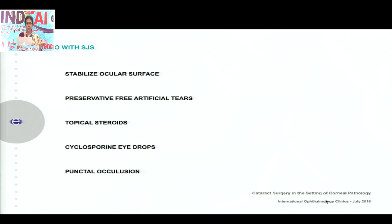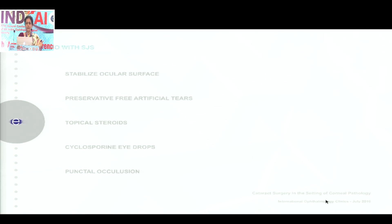Last but not the least, in Stevens-Johnson syndrome, you need to stabilize the ocular surface with topical steroid drops and cyclosporine, using all these adjuncts depending on the severity of the disease, followed by a careful phacoemulsification.